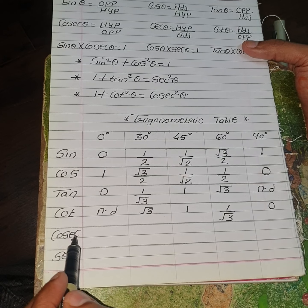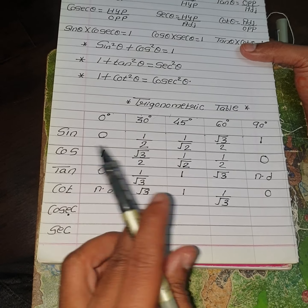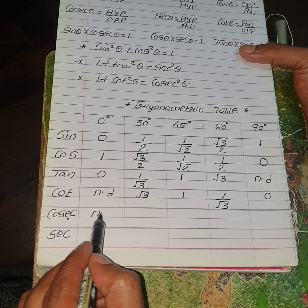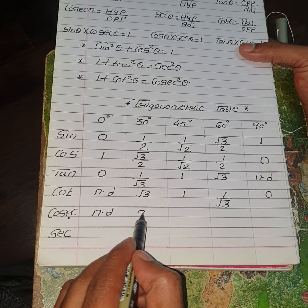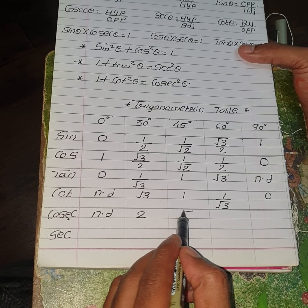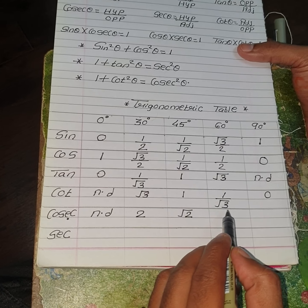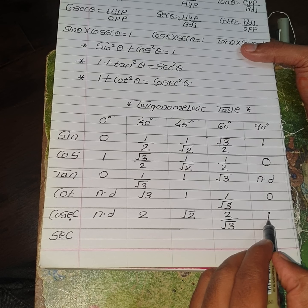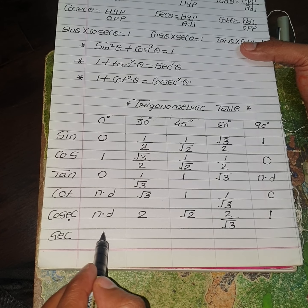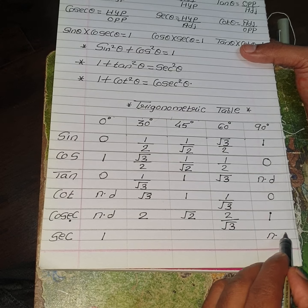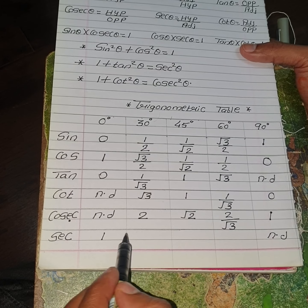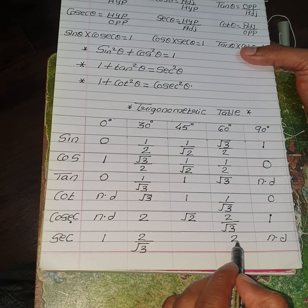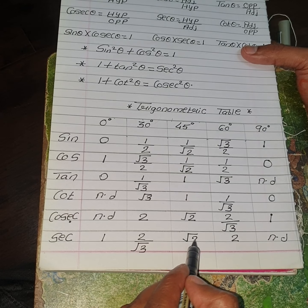Cosec is the reciprocal of Sin. So Cosec 0 is the reciprocal of 0, which is not defined. Cosec 30 is the reciprocal of 1/2, which is 2. Cosec 45 is the reciprocal of 1 upon root 2, which is root 2. Cosec 60 is the reciprocal of root 3 upon 2, which is 2 upon root 3. And Cosec 90 is the reciprocal of 1, which is 1. For Sec, just change the position: Sec 0 is 1, Sec 30 is 2 upon root 3, Sec 45 is root 2, Sec 60 is 2, and Sec 90 is not defined.